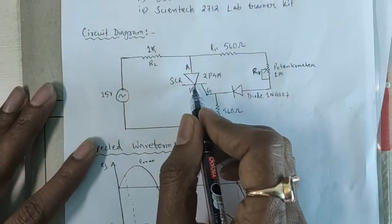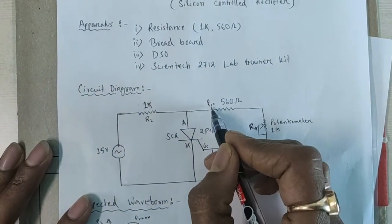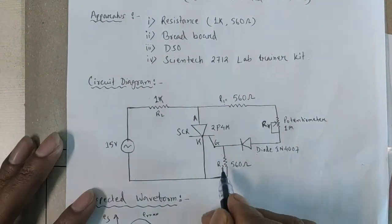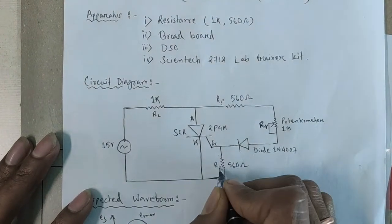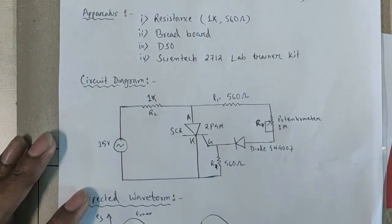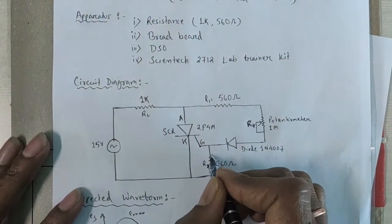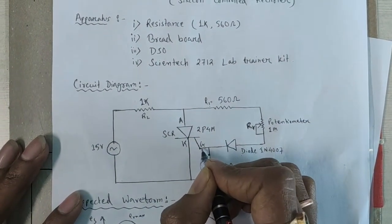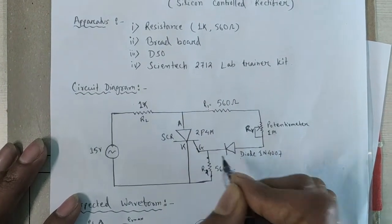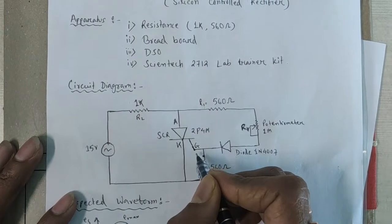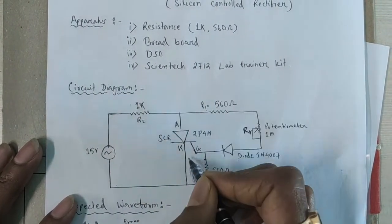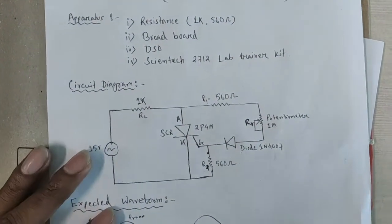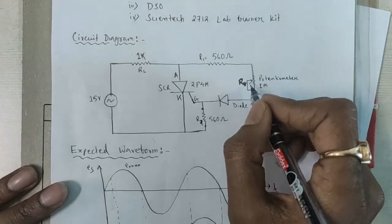To turn on this SCR, we will use R1, RV (potentiometer), the diode, and R2. This R2 resistance is called the stabilizing resistance. The voltage across R2 should not exceed the minimum gate voltage of the SCR. If this voltage exceeds the minimum gate voltage, then the SCR will turn on directly. So, this RV resistance is very important.